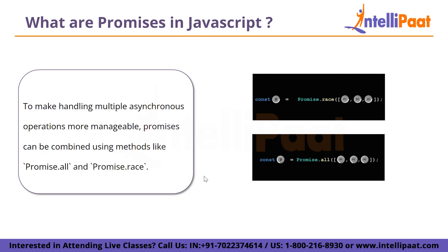To handle multiple asynchronous operations more manageably, promises can be combined using methods like Promise.all and Promise.race. Promise.all takes an array of promises and returns a new promise that fulfills when all input promises are done. Promise.race returns a new promise that fulfills or rejects as soon as one of the input promises fulfills or rejects.